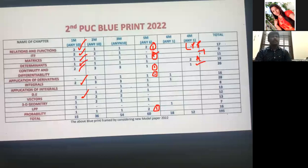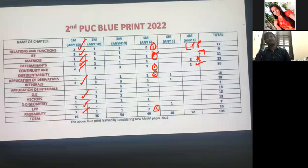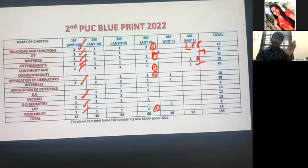For LPP one-mark, they may ask to define feasible region, optimal solution, or similar — there are three to four definitions. Read all four definitions because in the board examination you cannot predict which one they will ask. For Probability, they give direct questions like find P(A|B) or P(B|A) or P(A∩B). All 10 answers from these are easy — they give 15 questions and you need to answer only 10.